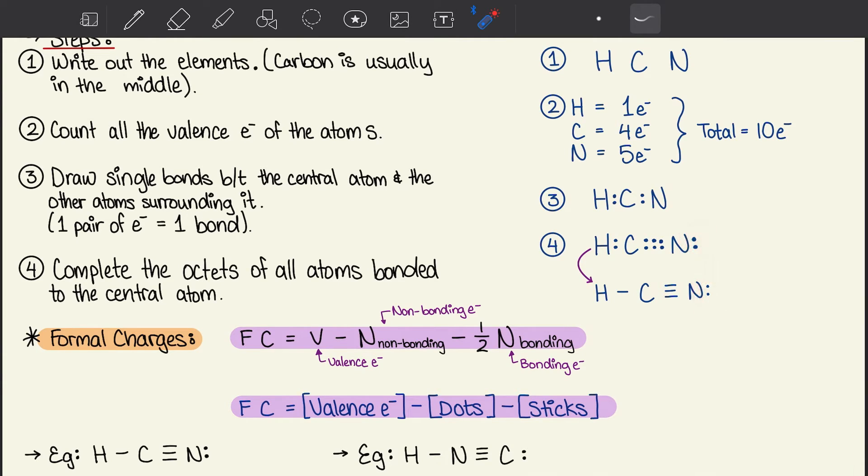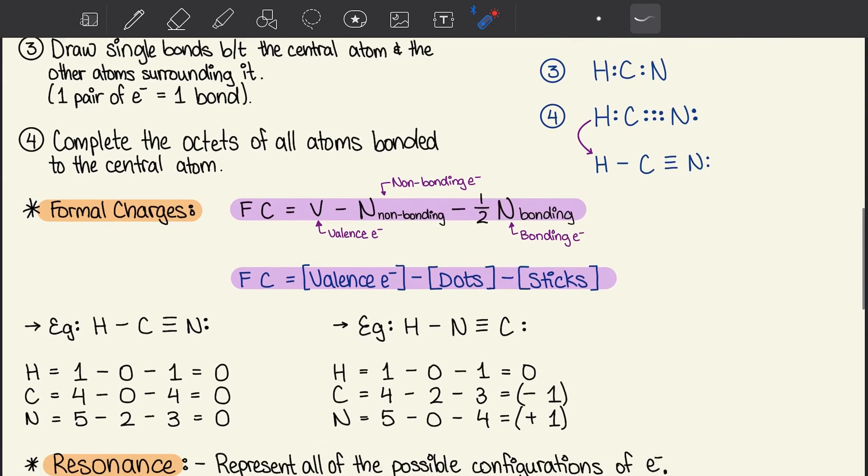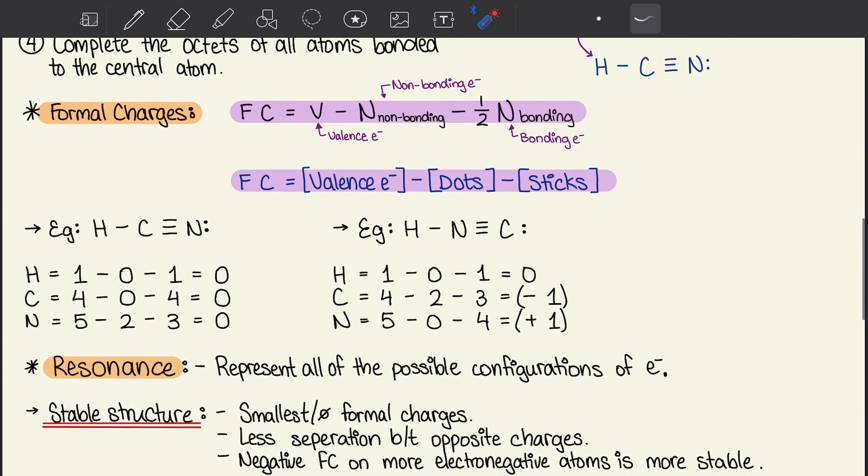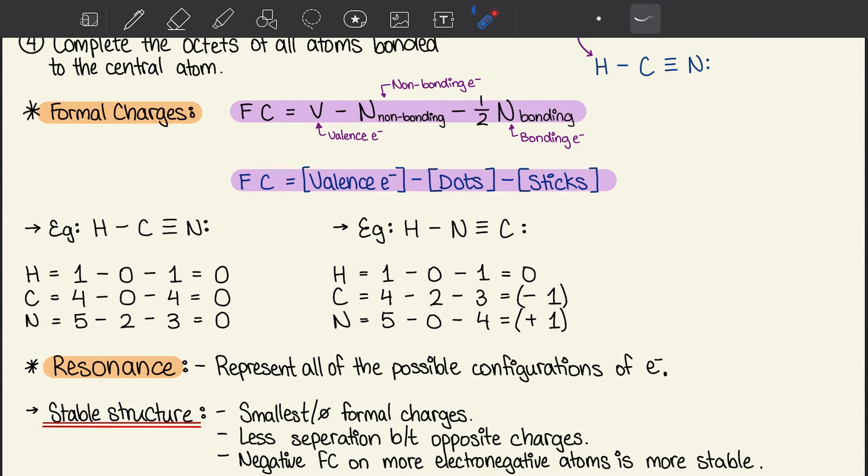Moving on to formal charges, we represent this with FC equals V minus N non-bonding minus half of N bonding. V is valence electrons, N non-bonding is non-bonding electrons, and N bonding refers to bonding electrons. Another way we can write this is FC equals valence electrons minus dots minus sticks, where dots refers to lone pairs and sticks refers to the number of bonds in our simplified HCN expression.